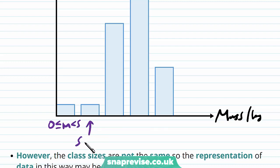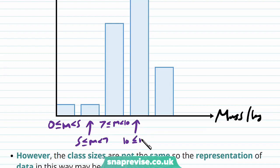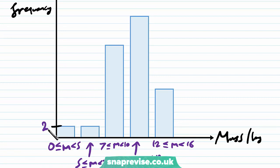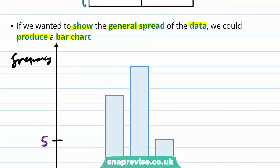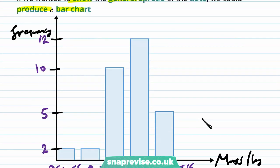We have 5 ≤ m < 7, then 7 and 10 as our endpoints, 10 and 12 as our endpoints, and 12 and 16 as our endpoints. We have values of 2, 5, 10, and 12 on the frequency axis. This is the bar chart corresponding to the data above.